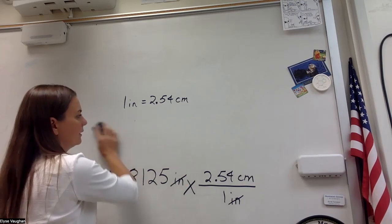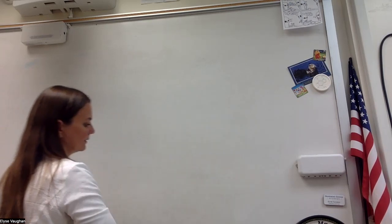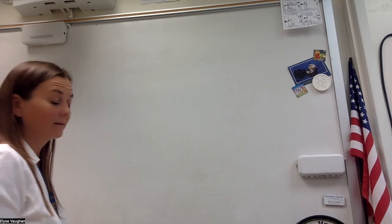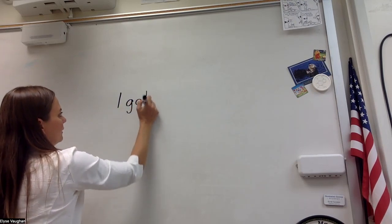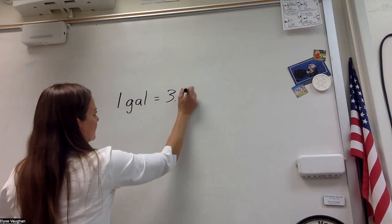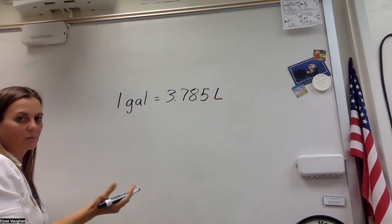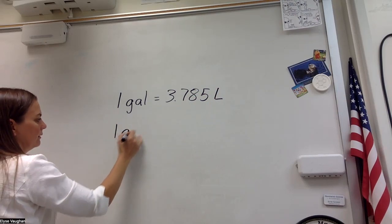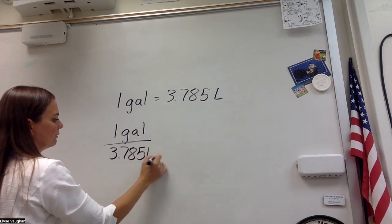So our next problem asks us to convert a 2 liter bottle into gallons. So again, I'm going to look at that conversion factor table at the top. And I'm going to find that one gallon equals 3.785 liters. And again...